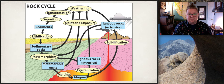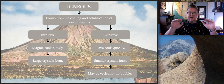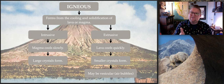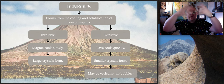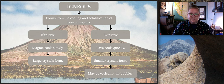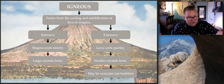We're going to look at each family individually, starting with igneous. Igneous rocks form from the cooling and solidification of lava or magma. Lava is what's on the Earth's surface; magma is underneath. Once magma pushes up and is expelled into the air, we identify it as lava. Intrusive rocks form deep beneath the Earth's surface and cool slowly, so large crystals are able to develop.